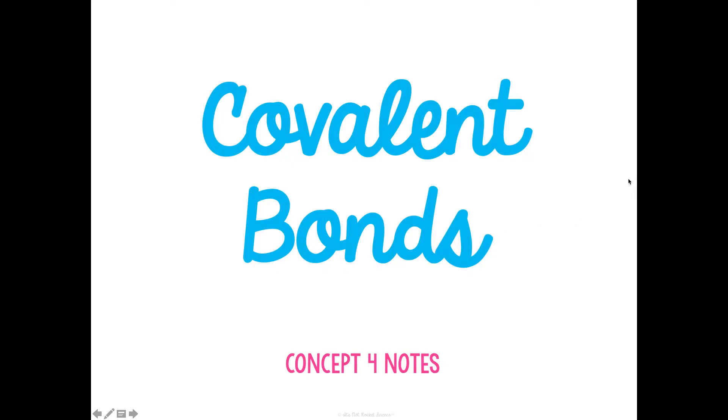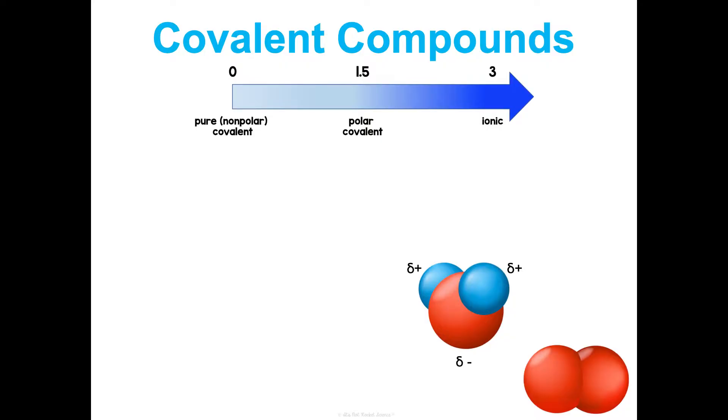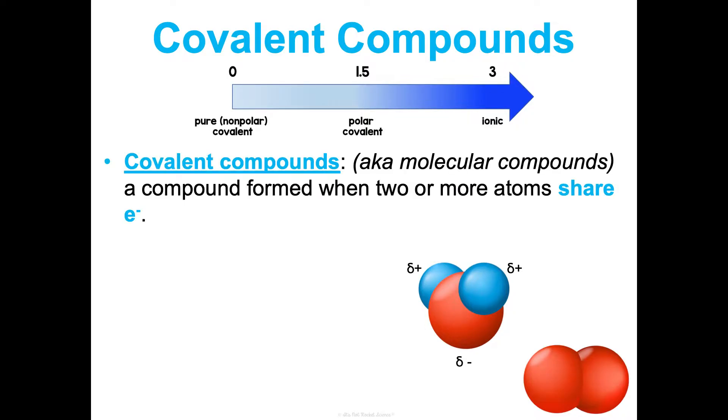Welcome to Concept 4 Notes. We are going to dive deeper into covalent bonds, which you were already introduced to in Concept 1, Intro to Bonding. But now we're going to learn how to name them and write the chemical formulas and all that jazz, just like we did for ionic. So just a reminder, covalent compounds, which are also referred to as molecular compounds, since covalent compounds make molecules, are a compound formed when two or more atoms are sharing electrons, and they form between non-metallic elements.